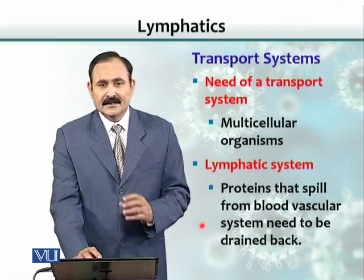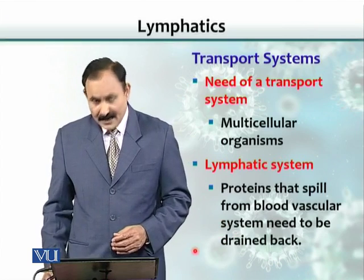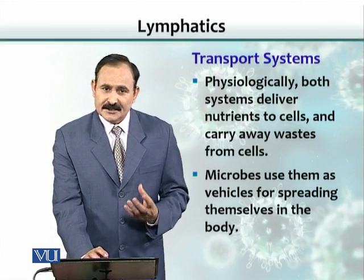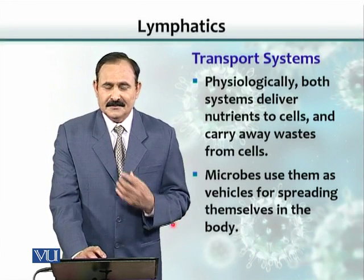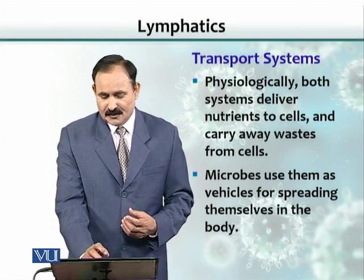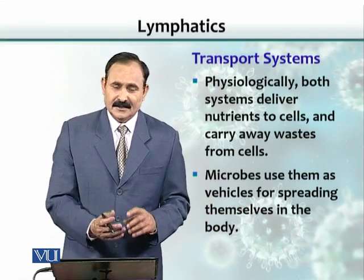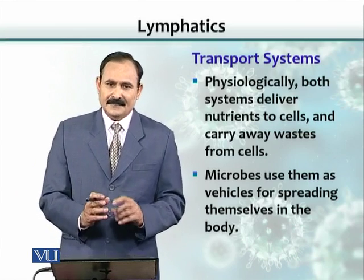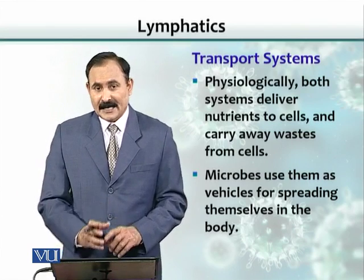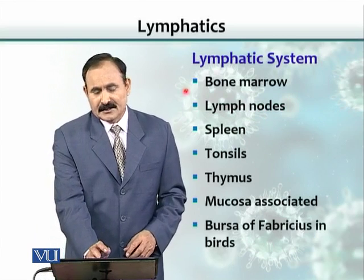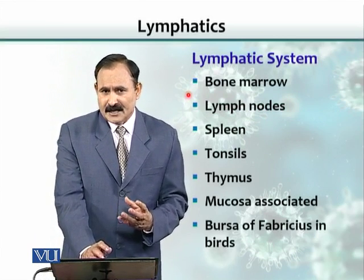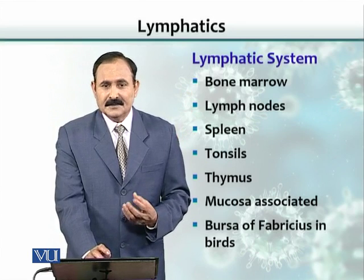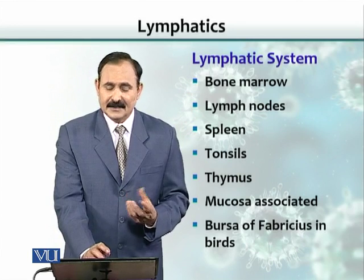Lymphatics drain those extra proteins, extra cells, and all that material. Physiologically, both systems deliver nutrients to cells and carry away waste. Sometimes the body ends up with microbial infections, and those microbes use both the blood system and lymphatics as a vehicle for spreading. That is why lymphatics have filters called lymph nodes and other lymphoid structures — including in the bone marrow, which has cells that deal with microorganisms. The spleen is another lymphoid organ that filters blood, like lymph nodes filter lymph.